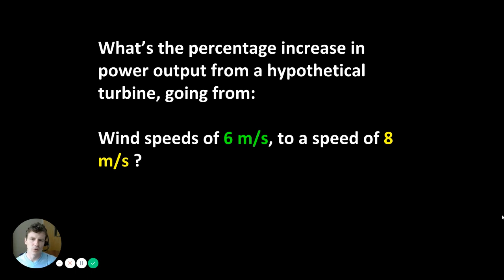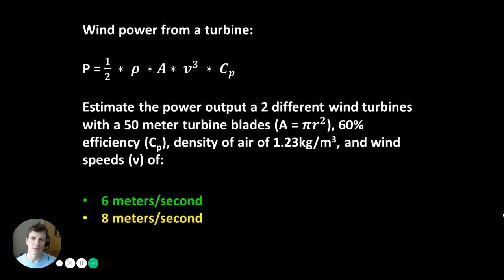Let's do an example to drive home the importance of wind speeds as a controlling factor. The question is: what is the percentage increase in power output from a turbine going from wind speeds of 6 meters per second to 8 meters per second? We'll use the equation: P equals one-half times air density times rotor swept area times velocity cubed times the Betz coefficient — essentially a 60 percent efficiency.